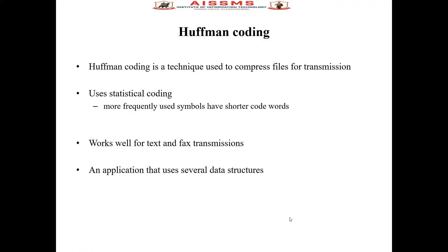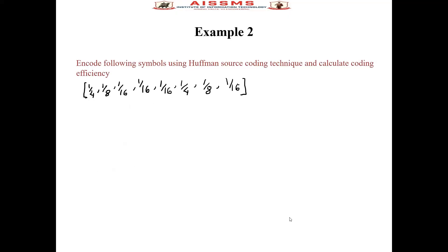Huffman coding is a technique used to compress files for transmission. It uses statistical coding where more frequently used symbols have shorter codewords. It works well for text and fax transmission, and several data structures use Huffman coding. Students, you have to solve this practice problem: encode the following symbols using Huffman source coding technique and calculate the coding efficiency. There are 8 symbols with probabilities 1/4, 1/8, 1/16, 1/16, 1/16, 1/4, 1/8, and 1/16. Thank you.